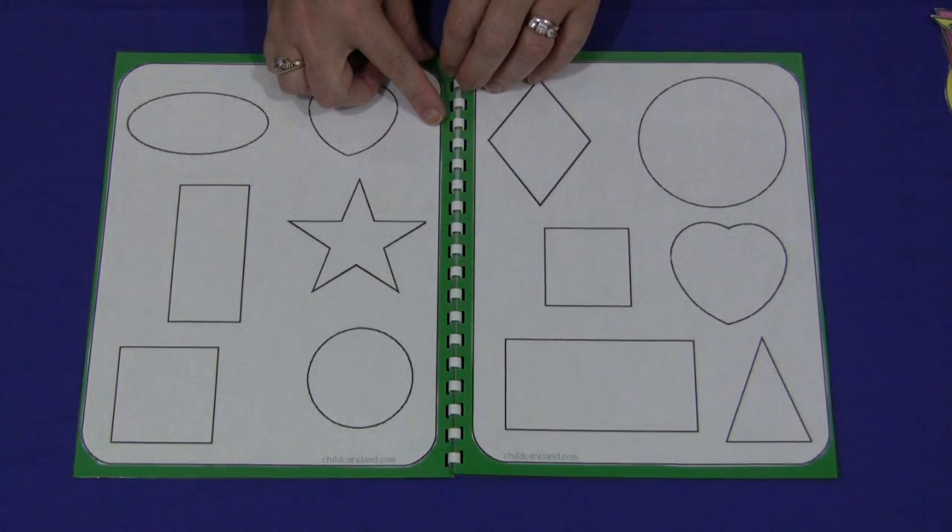I laminate the pages and then I bind them. I have a home binding machine and there are some really inexpensive ones out for about fifty to seventy dollars. So if you ever get a chance I recommend buying a binding machine. I have a video of my binding machine coming up later in the week.